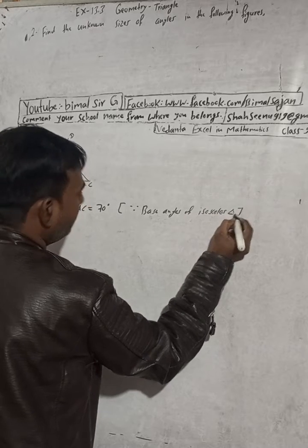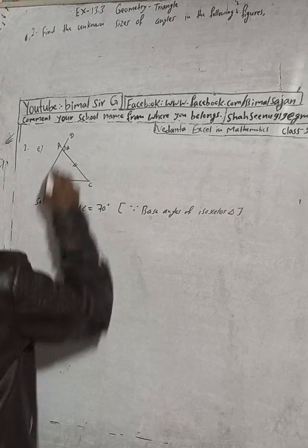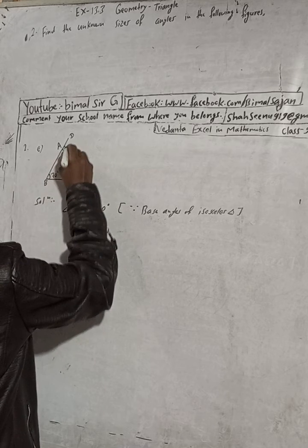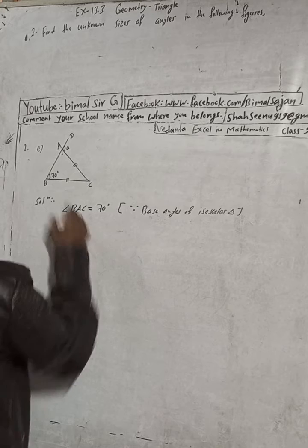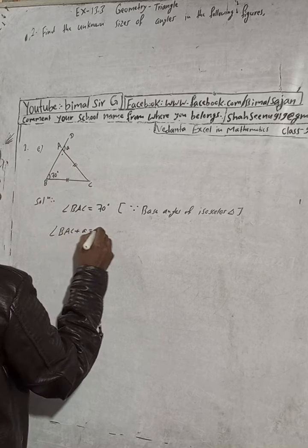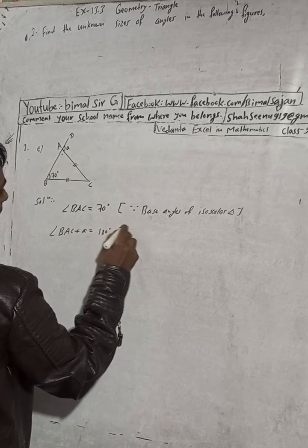Now this angle we know. Now this angle plus this angle, so angle BAC plus angle A is equal to 180 degrees. The reason for this one being part of a straight line.